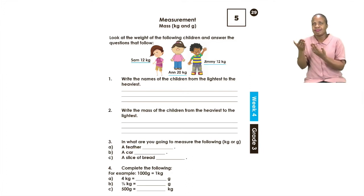Let's take a look at the weight here. We have two questions that are asking us about these three people. Now we have children and we are told how much they weigh, how much they measure or rather what is their mass. Sam is 12 kgs. An is 20 kgs. And Jimmy is 12 kgs.